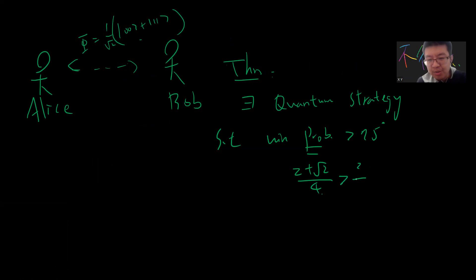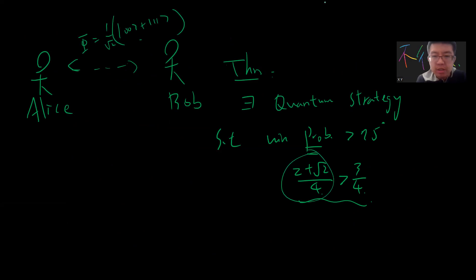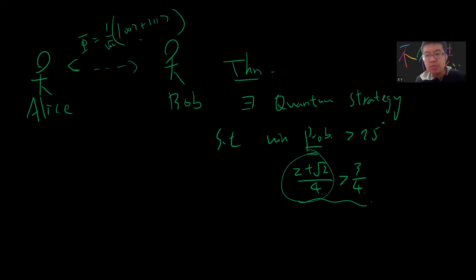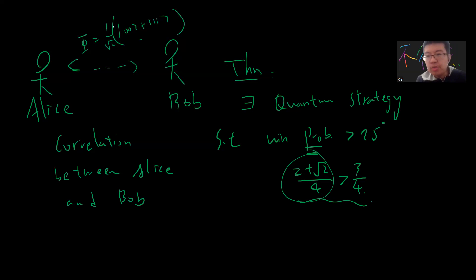We can prove that (2 + √2) / 4 is greater than 3/4. This is very weird. I am not going to prove that this is the best strategy, but I will explain why this strategy works. A key point is that a Bell pair does not allow communication — that is a fact from quantum information — but it does allow Alice and Bob to establish a correlation.